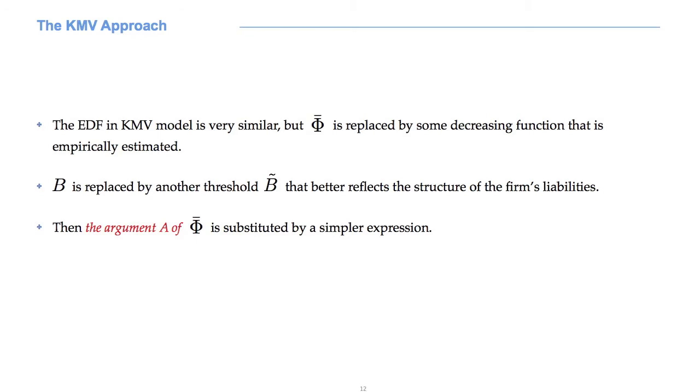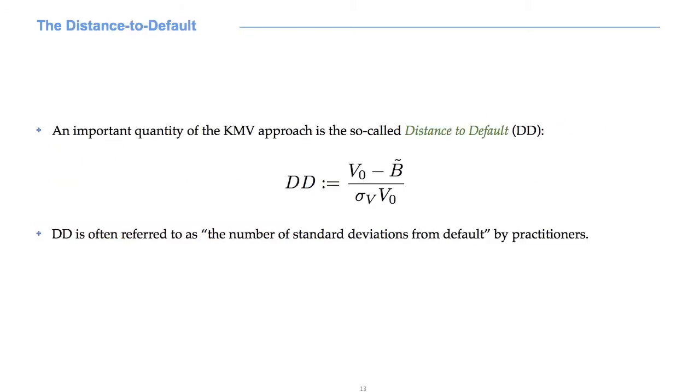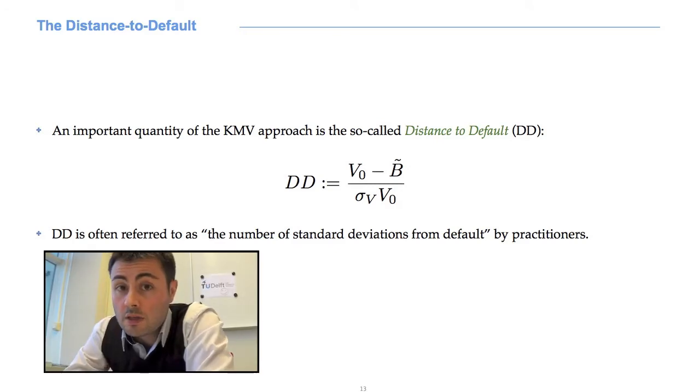As we will see, this will have an impact on the model, because now default can happen at every time before capital T. Finally, the argument A of phi bar is replaced by another simpler expression. A fundamental quantity of the KMV approach is the so-called distance to default, DD. This is the ratio between V0 minus B tilde and the product of sigma V and V0.